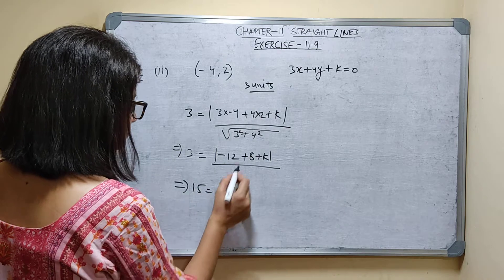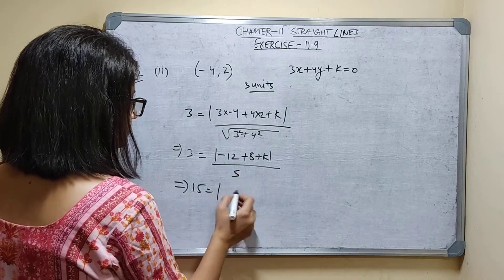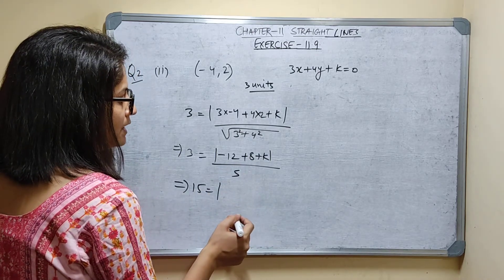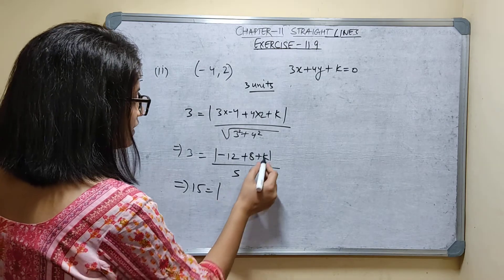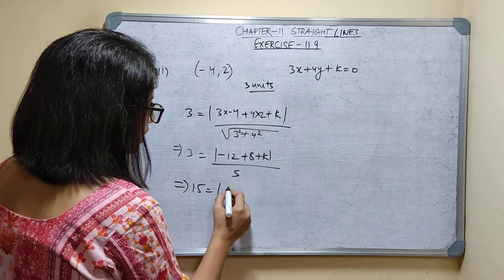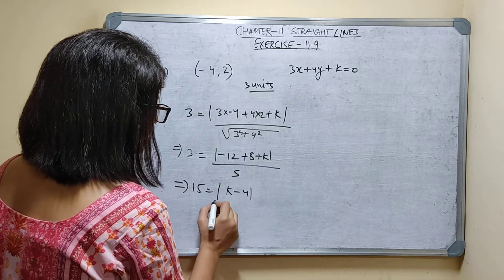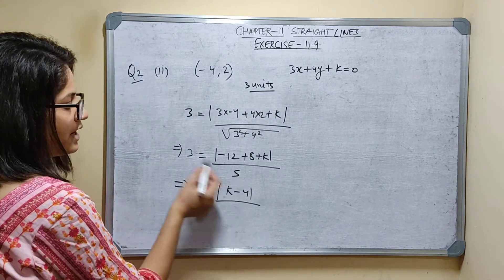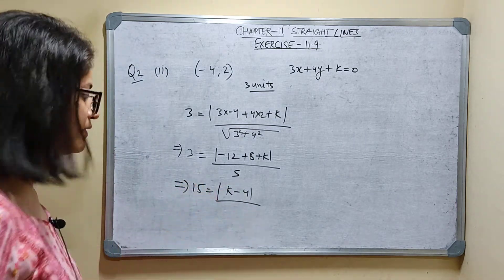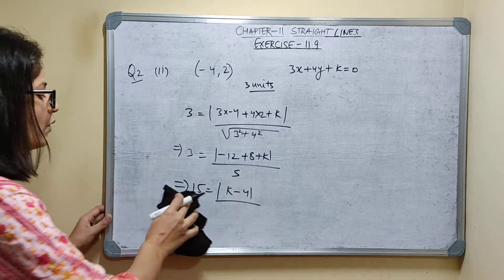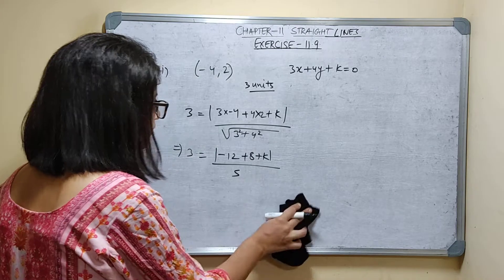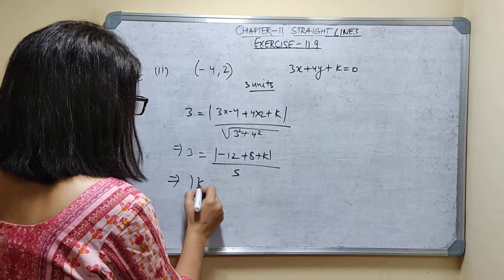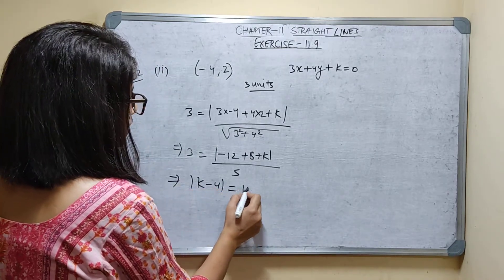So 15 is equal to: 3 into minus 4 is minus 12, plus 8 plus k, upon... already multiplied by 5 to get 15. So 8 minus 12 is minus 4, giving minus 4 plus k, or k minus 4. Mod of k minus 4 is equal to 15.